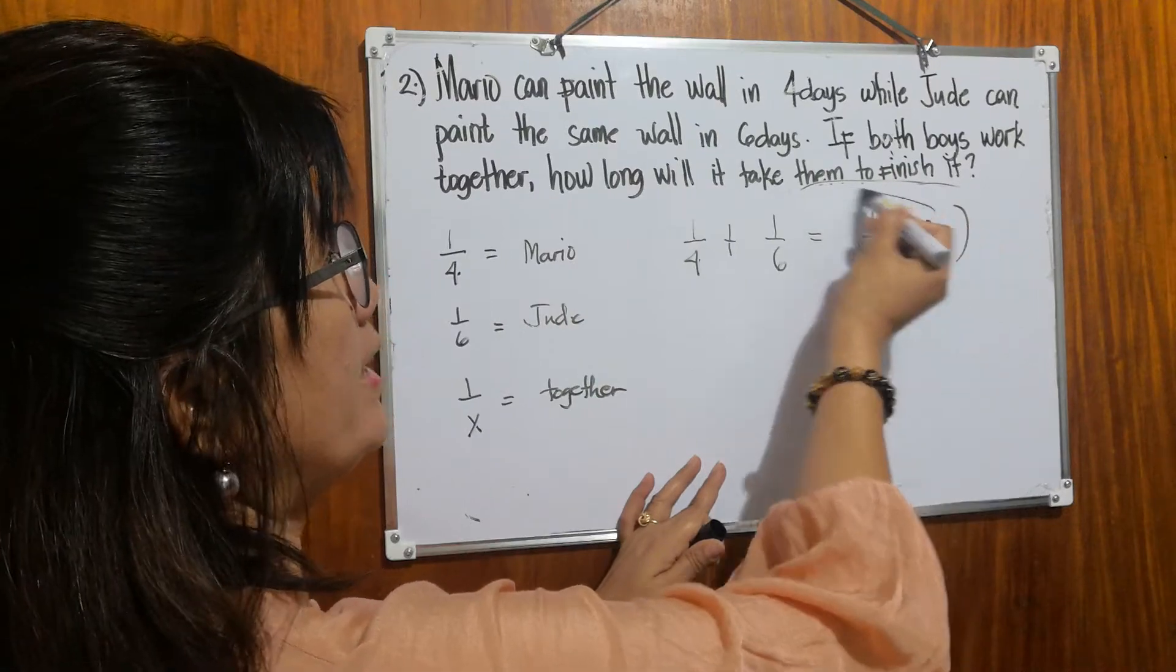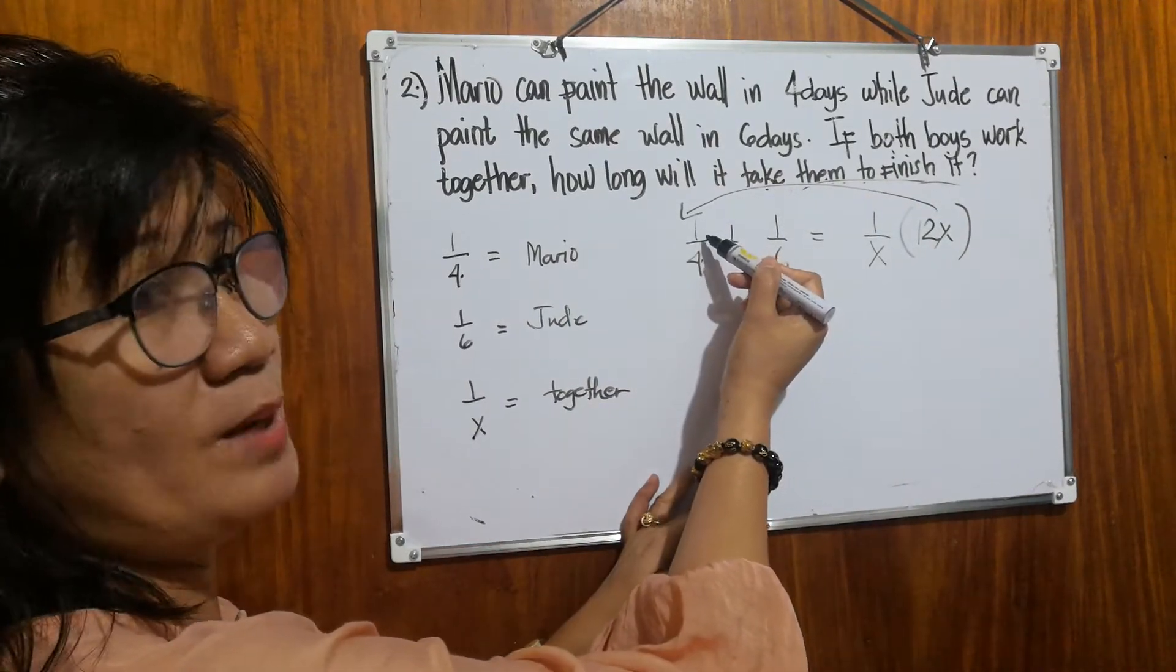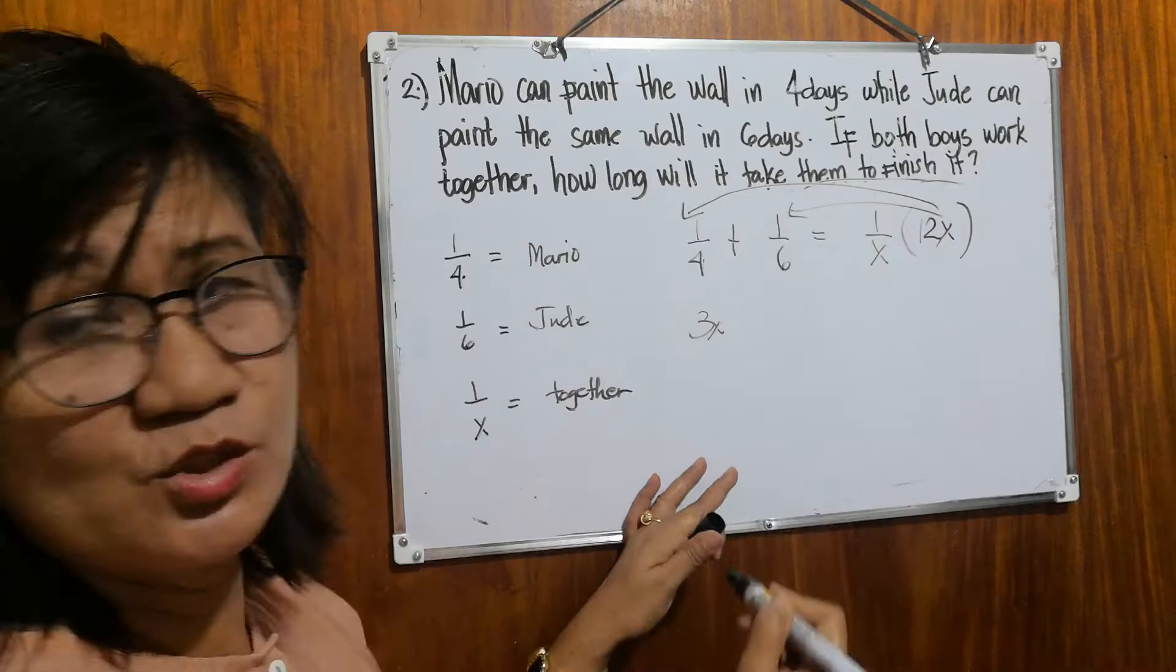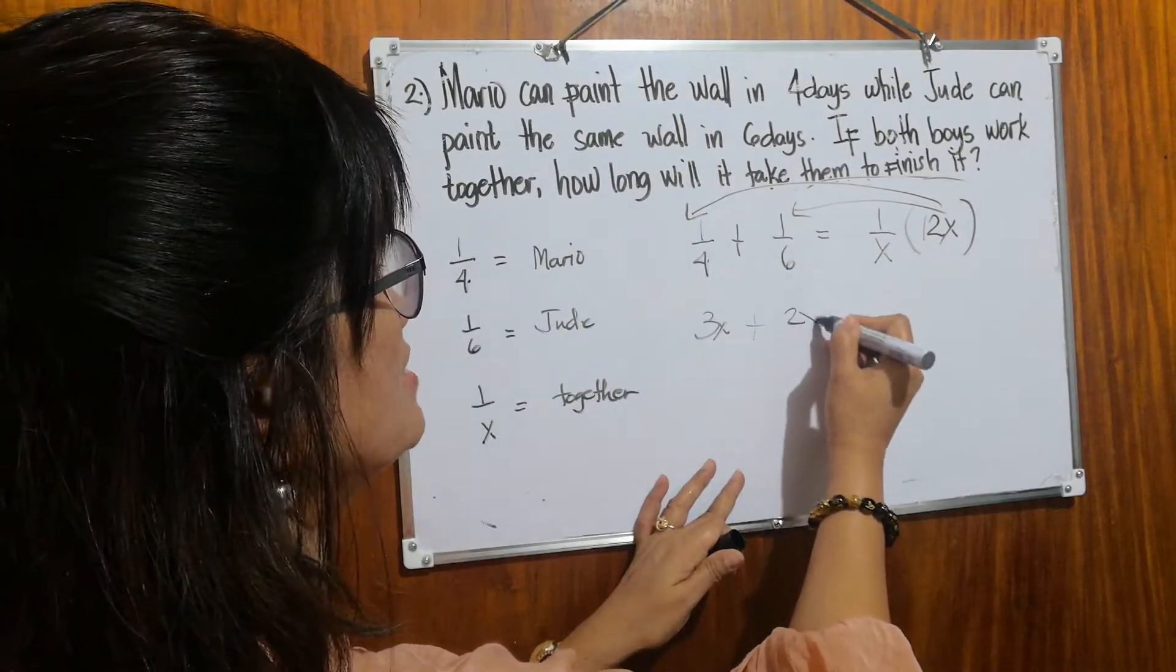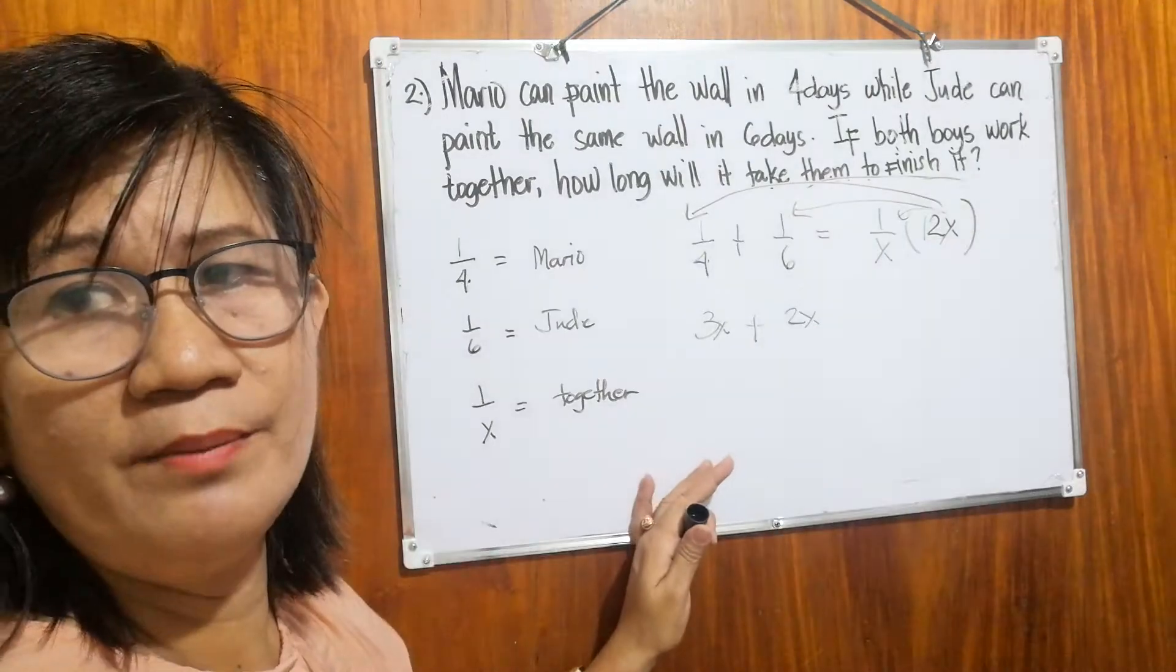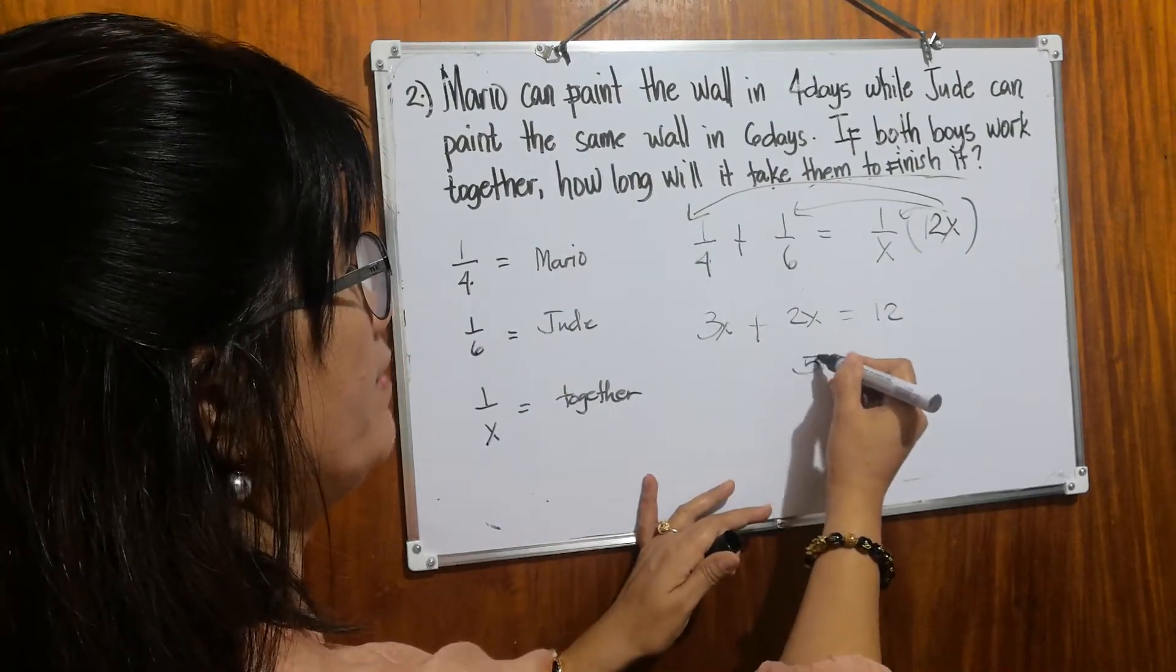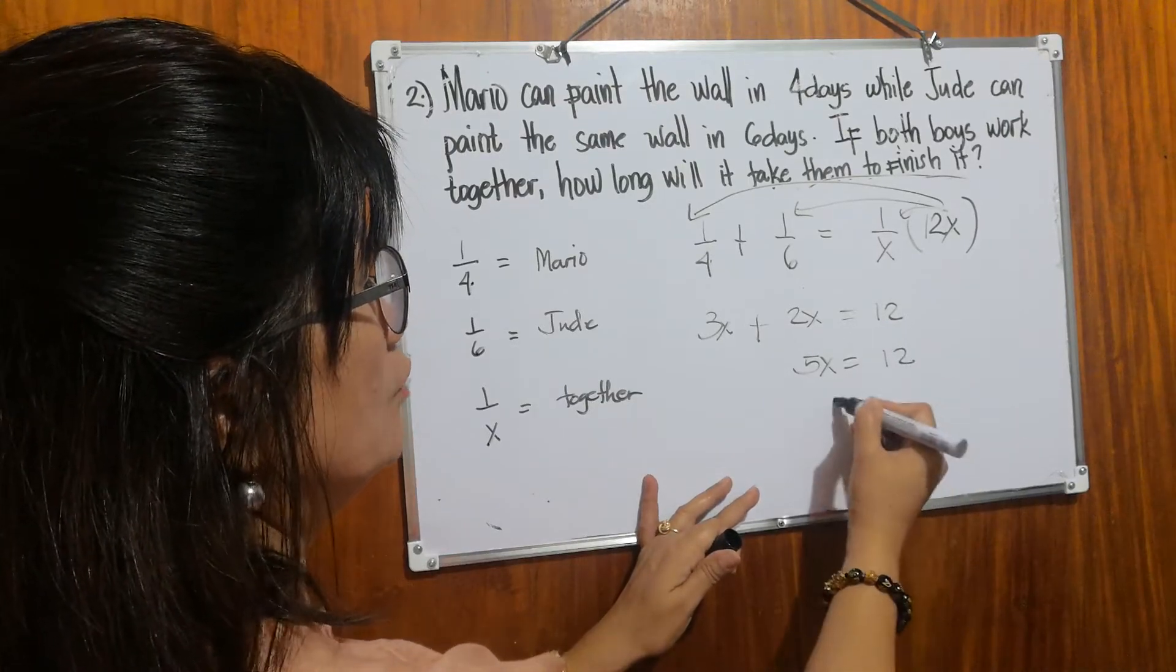Then let's multiply and divide. So what is 12x times one? 12x. Divided by four equals 3x. 12x times one is 12x. Divided by six equals 2x. Then 12x times one equals 12x. Divided by x, the answer is 12. Then let's add. It will be 5x. Then you bring down 12.